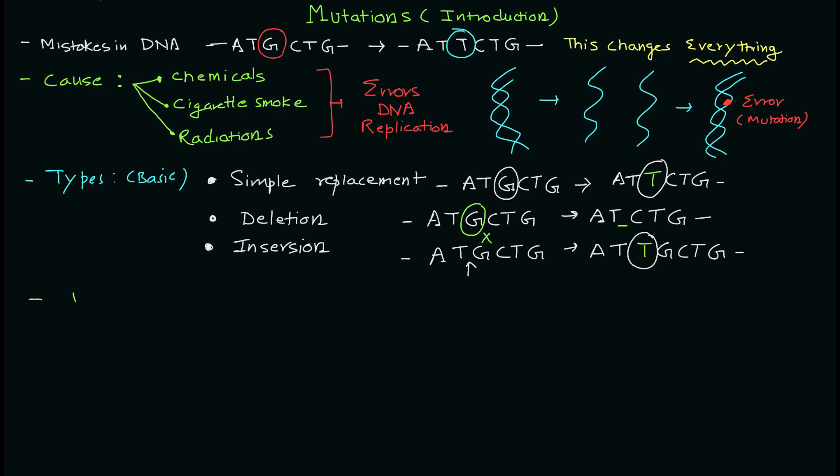These are the basic types. Now let's discuss the transfer of mutations. For example, if you have a mutation in the somatic cell versus a germline cell, what will happen? If you have a mutation in the somatic cell, the mutation will not be transferred to the offspring, even though you can acquire mutations in somatic cells over time.